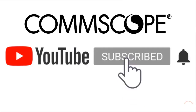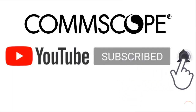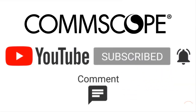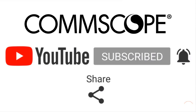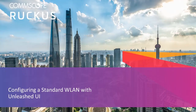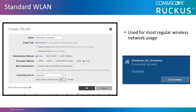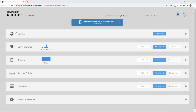If you like our content, please like, subscribe, and click the notification bell to get alerts when we introduce new videos. In this video, I'll demonstrate how to configure a standard WLAN using the CommScope Ruckus Unleash user interface. This type of WLAN can be used with specific options for employees or guests and is used frequently for most regular wireless network usage. So from the main Unleash dashboard,